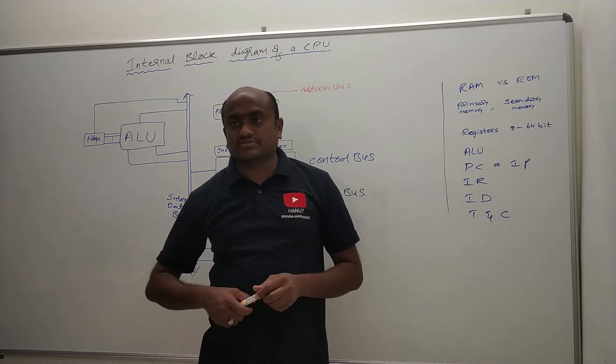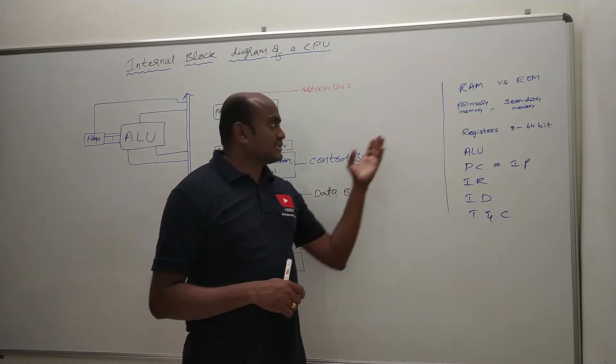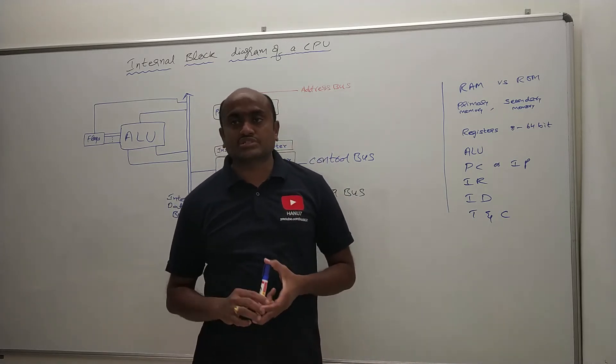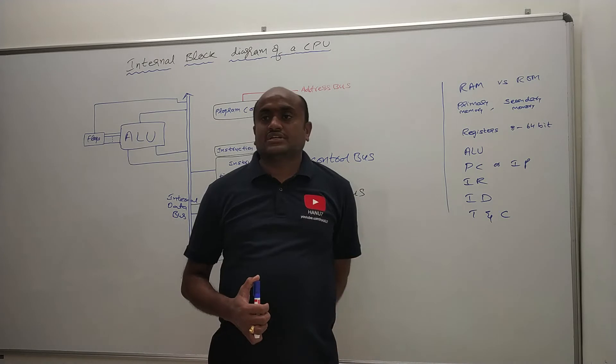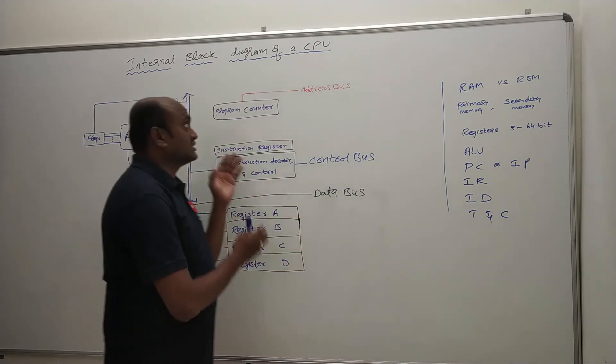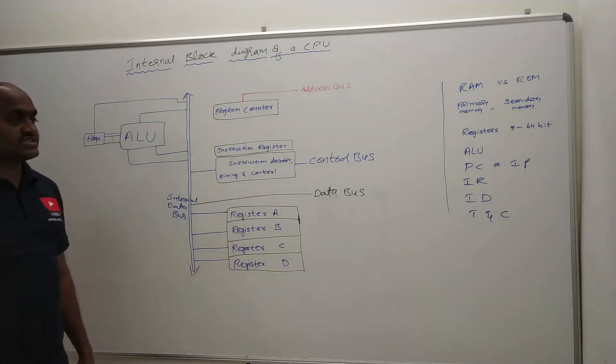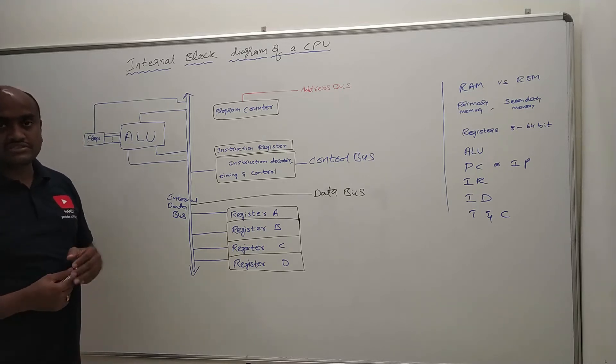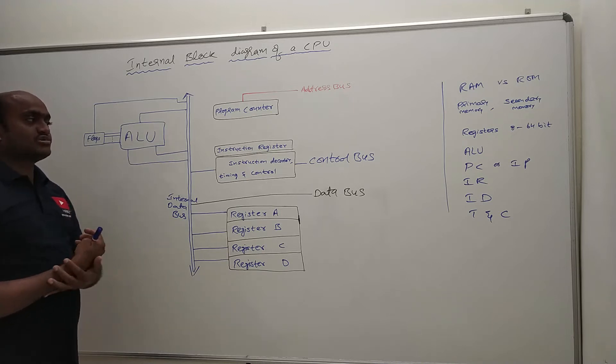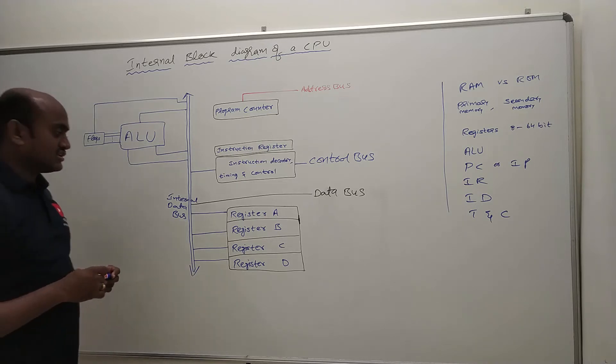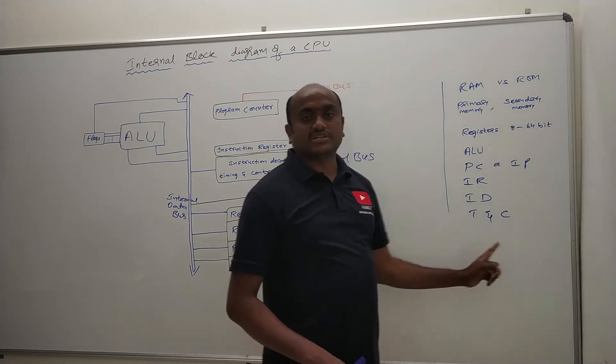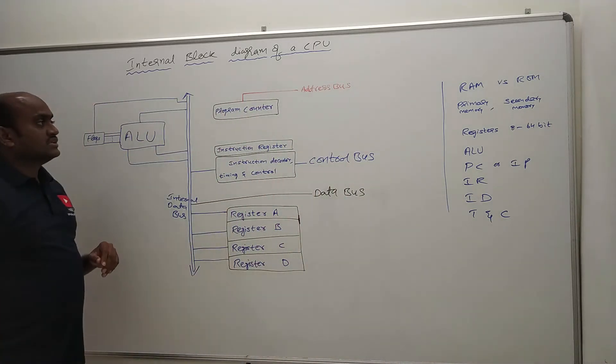RAM versus ROM we will discuss, and then we will also discuss about primary memory and secondary memories. Then we will discuss about the registers, what are the register set which are available in this internal block diagram of a CPU. Then we will discuss ALU, PC that is program counter, and also we will discuss about instruction register, instruction decoder, and timing and control circuit. So this is what is the agenda of this particular video or session.